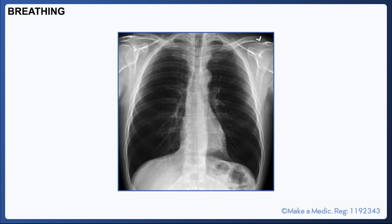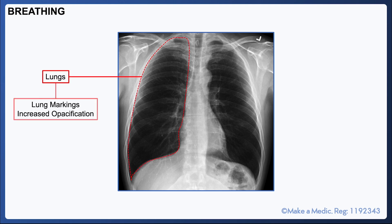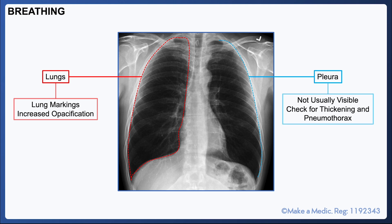Assessing breathing in the context of chest x-rays involves firstly looking at the lungs. You should be able to see some lung markings, but increased opacification may be suggestive of infection or masses. A loss of lung markings is seen in pneumothorax. The pleura are not usually visible, but you may note changes like pleural plaques, which are commonly seen in patients with a background of asbestos exposure. Irregular thickening of the pleura may also be visible in patients with mesothelioma. The presence of a very clear pleural edge with loss of lung markings outside the border is classically seen in patients with a pneumothorax.